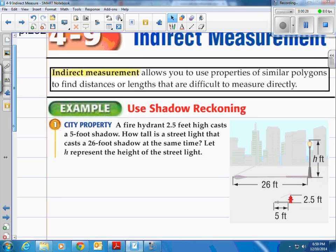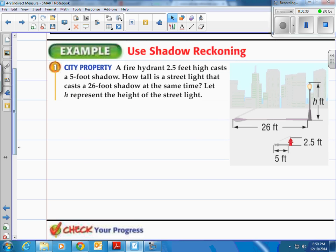Let's look at the example here. It's called shadow reckoning and the example we have is a fire hydrant and a street lamp. It says a fire hydrant is 2.5 feet high and it casts a 5-foot shadow. How tall is a street light that casts a 26-foot shadow at the same time?